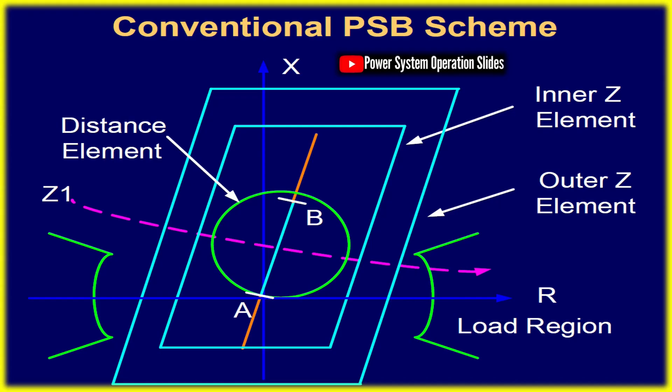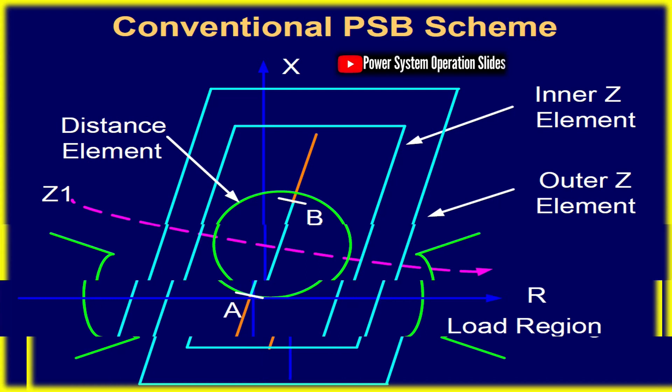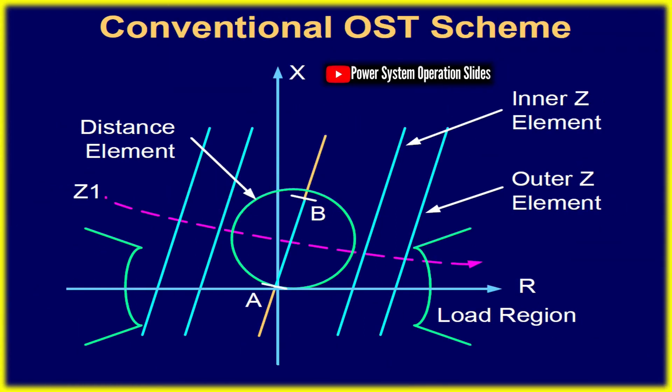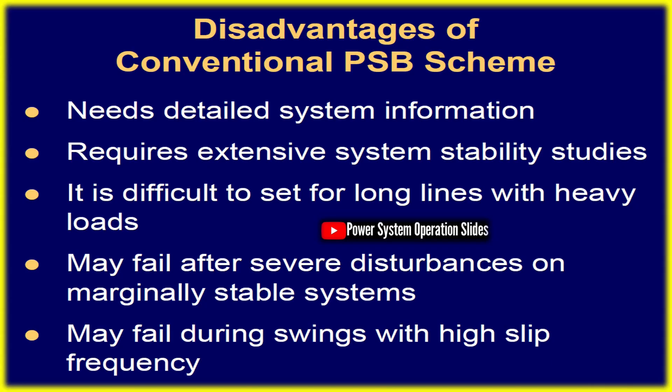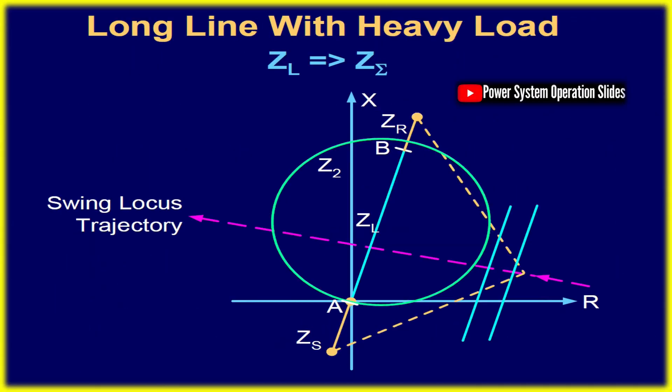In an unstable scenario, significant variations in generator rotor angles emerge, accompanied by large fluctuations in power flow, voltage, and current. These disturbances can ultimately lead to generators or interconnected systems losing synchronism. When two power system areas fall out of sync, the entire network experiences extreme shifts wherein phase operation results in high voltages with low currents, whereas a 180-degree phase difference causes low voltages and high currents, leading to severe system instability.